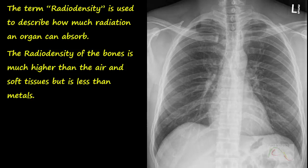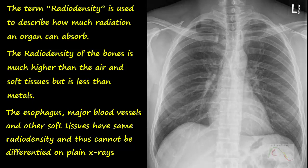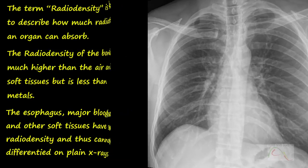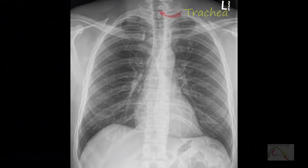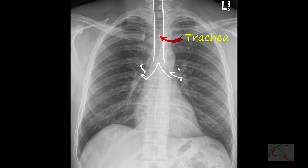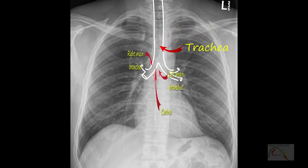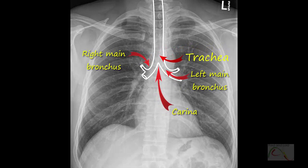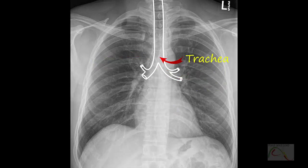If two anatomical structures absorb similar quantities of x-rays, it becomes difficult to distinguish them from the image. The most common purpose of the chest x-ray is to assess the lungs, airways, and cardiovascular system. The large airways are visible on good quality chest x-rays and appear darker as they contain air. The trachea branches at the carina into the right and left main bronchi. Bronchi can often be followed into the hilum as they branch further, but are difficult to follow beyond the hilum. Tracheal deviation to either side usually points to some pathology.